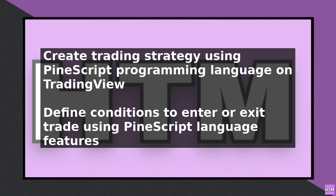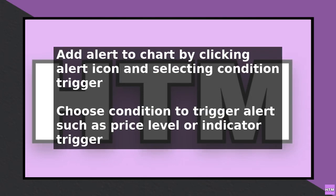You can choose from a variety of conditions, such as when the price reaches a certain level or when a specific indicator is triggered. When the condition is met, TradingView will send you a notification, but it will not say 'order filled.' To make it say 'order filled,' you need to use a workaround.